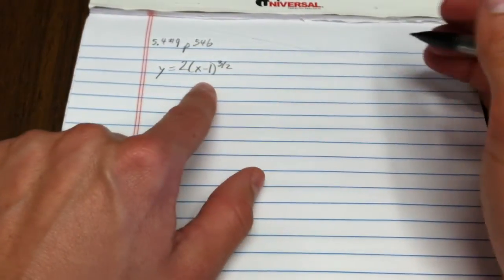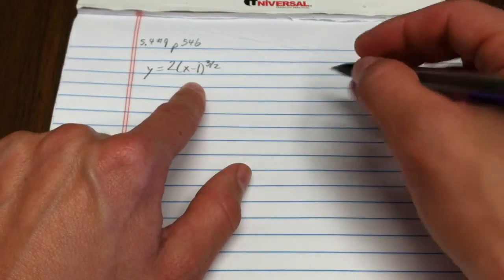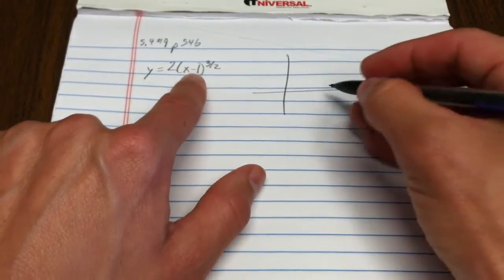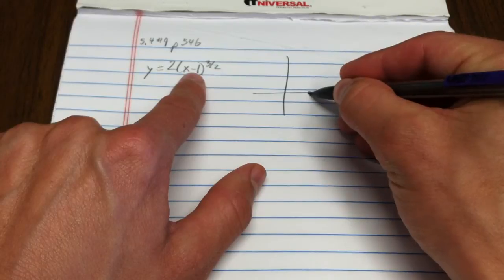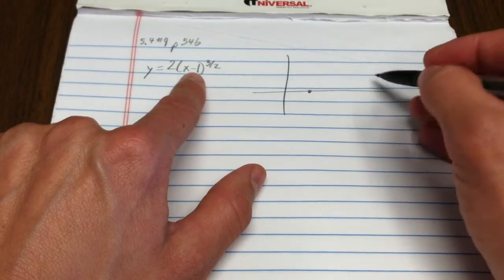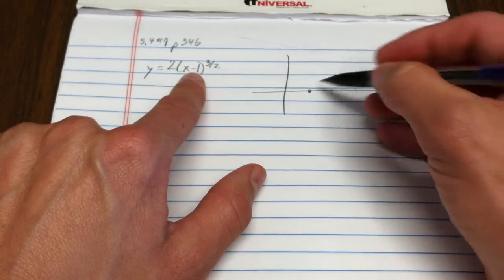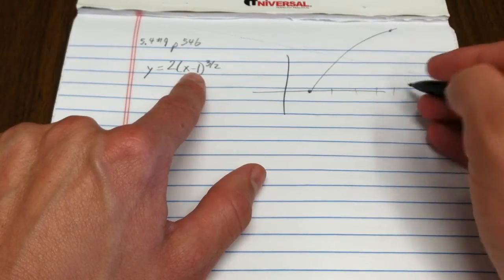This goes through the point (1, 0), then through the point (5, 16), something roughly like that.